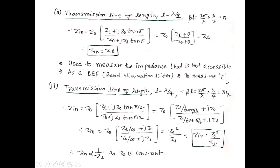For a transmission line of length L = λ/4: βL = π/2, and tan(π/2) → ∞. Taking tan(π/2) outside and simplifying: Zin = Z₀·(Zl/tan(π/2) + jZ₀)/(Z₀/tan(π/2) + jZl). As tan(π/2) → ∞, Zin = Z₀·(0 + jZ₀)/(0 + jZl) = Z₀²/Zl. Therefore Zin is inversely proportional to Zl, since Z₀ is constant.